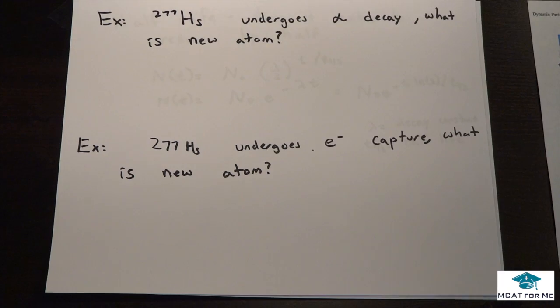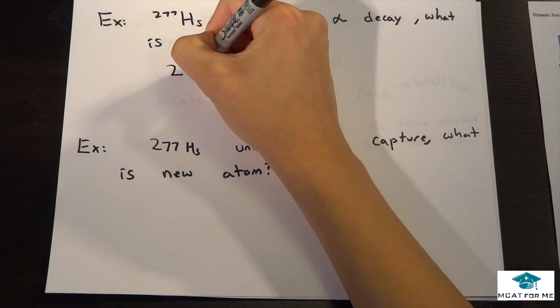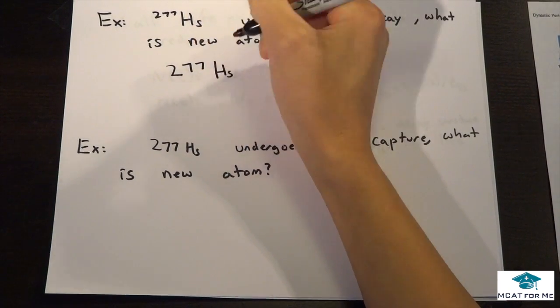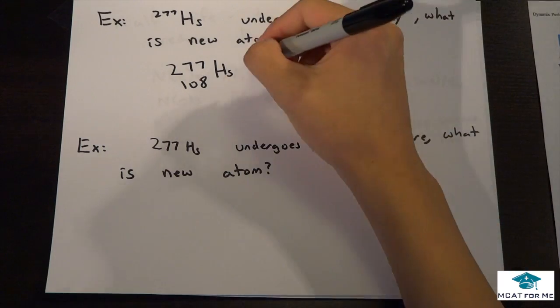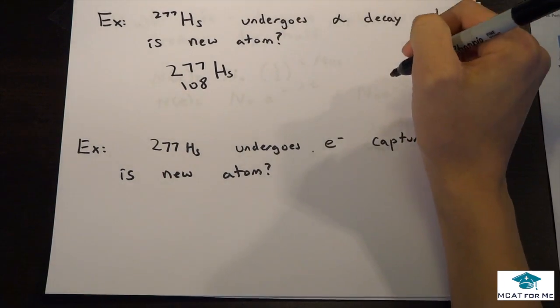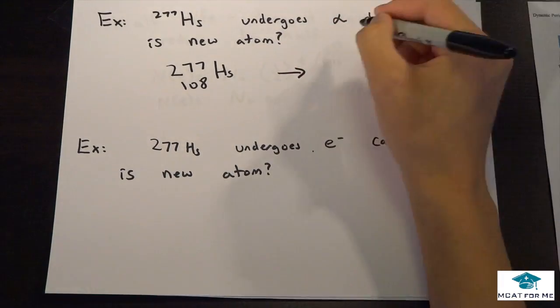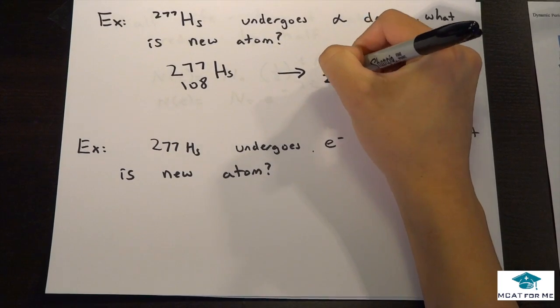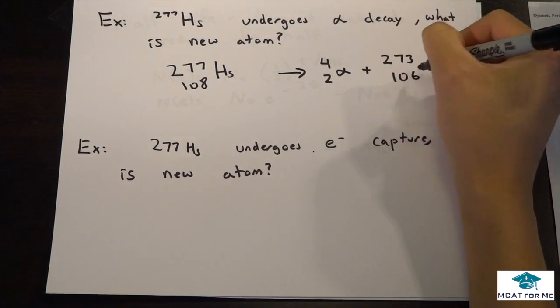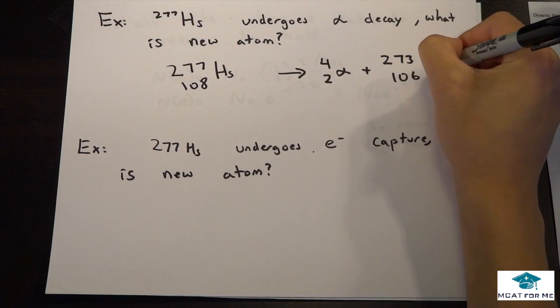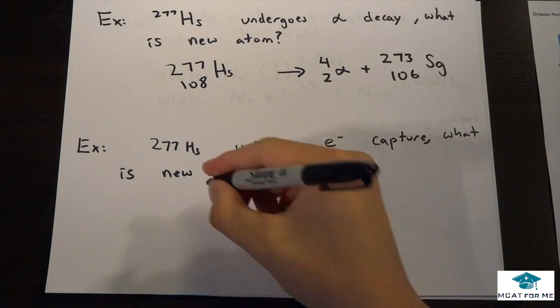So let's just do a simple example. We probably have this part down. So we have HS, which has a proton number of 108. And we can just find that on the periodic table. And now it undergoes alpha decay. So alpha decay releases an alpha particle, right? So that's why we would get that. So that should make pretty good sense.